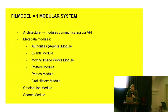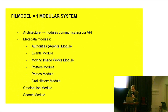Film Model is the working title for our upcoming cataloging system. It will be developed in cooperation with a software development company and we are preparing a public tender for it. The Film Model will be designed as a collection of independent modules that communicate with each other using an application programming interface, giving us freedom to combine new and additional modules. It will encompass cataloging film and other moving image works as well as posters, photography, and oral history interviews.